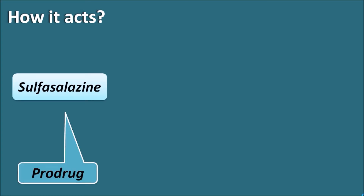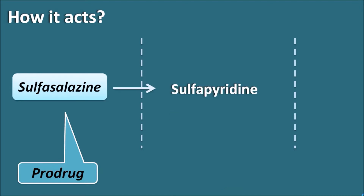How does it act? Sulfasalazine is a prodrug which must be activated when administered into the body. Whenever sulfasalazine is administered, it is poorly absorbed, and whatever is absorbed is secreted back into the colon where it is metabolized to produce its active metabolites. About 90% of the drug reaches the colon where it is split into two components.